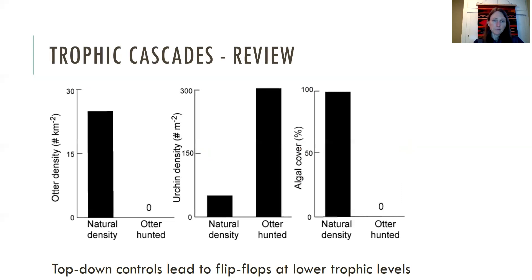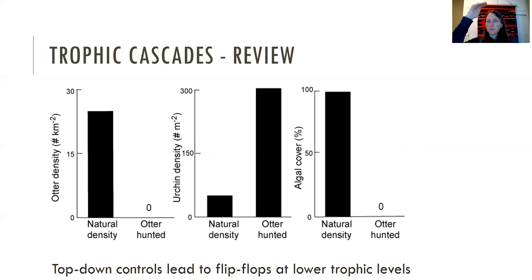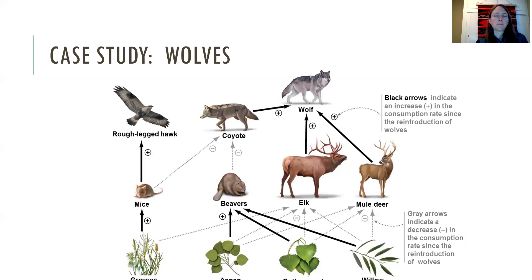This is what a trophic cascade is. Top-down controls can lead to flip-flops. For example, where otters are at natural density and then hunted to zero, urchins will go up because there's no one to prey on them, and then the algae will go down where there are lots of urchins. You get these really dramatic flip-flops in systems with trophic cascades.